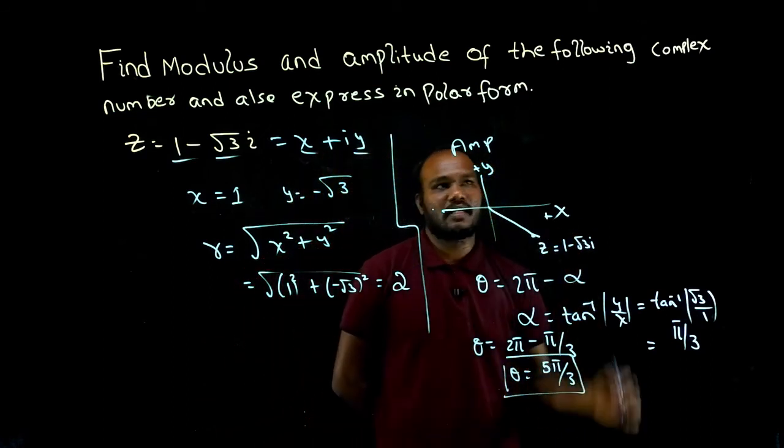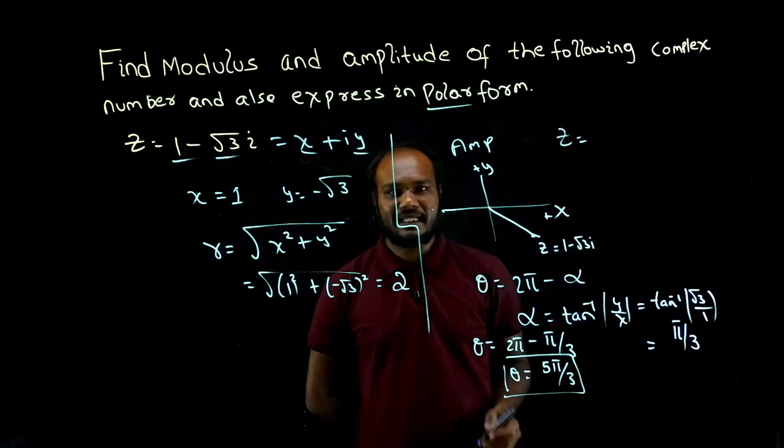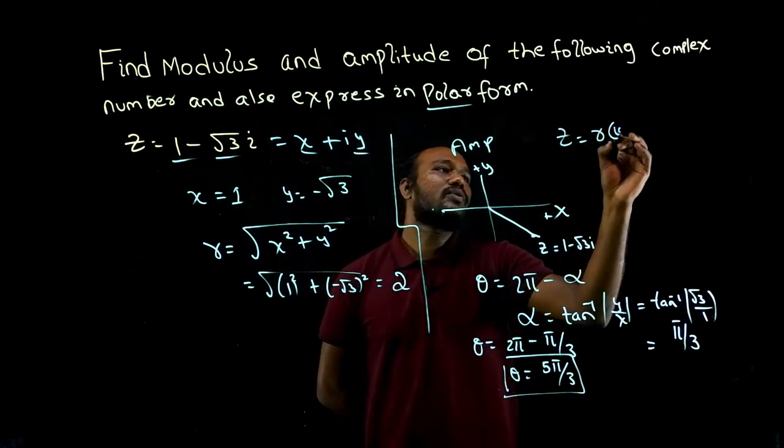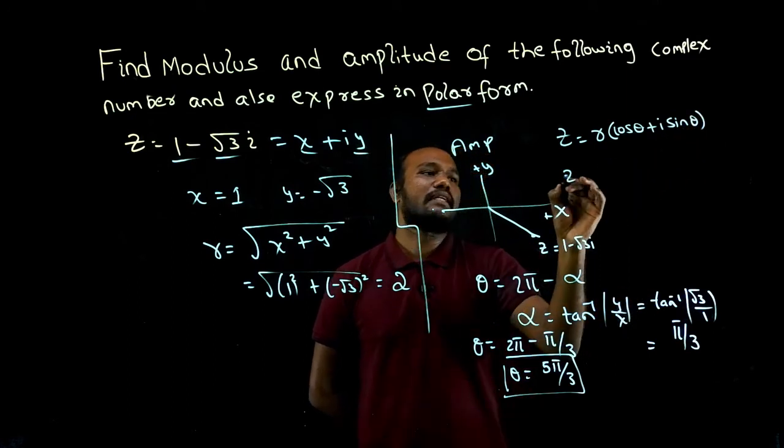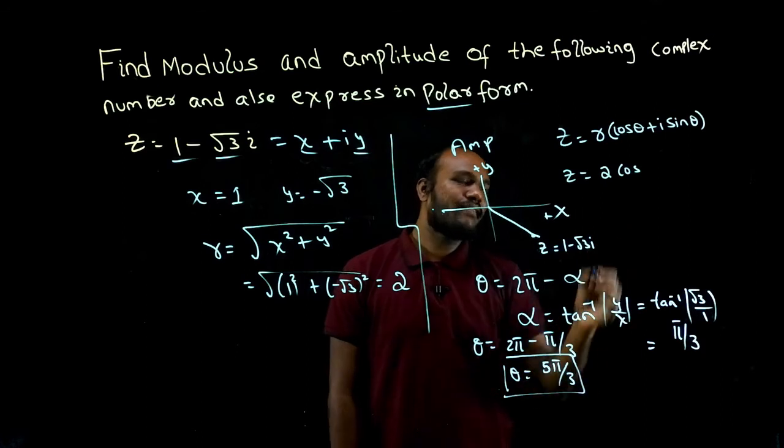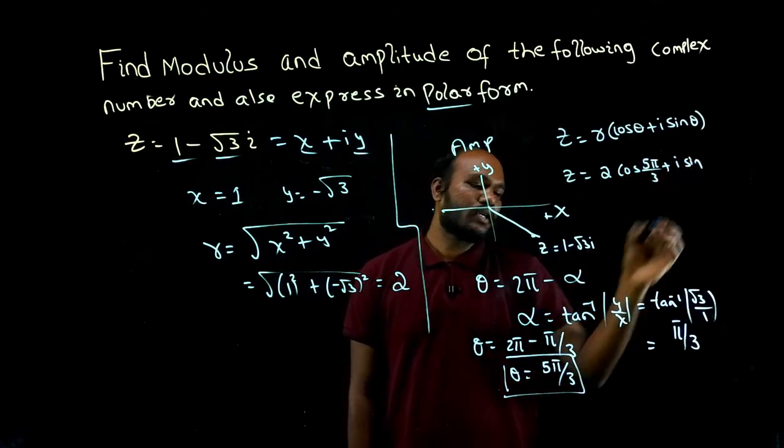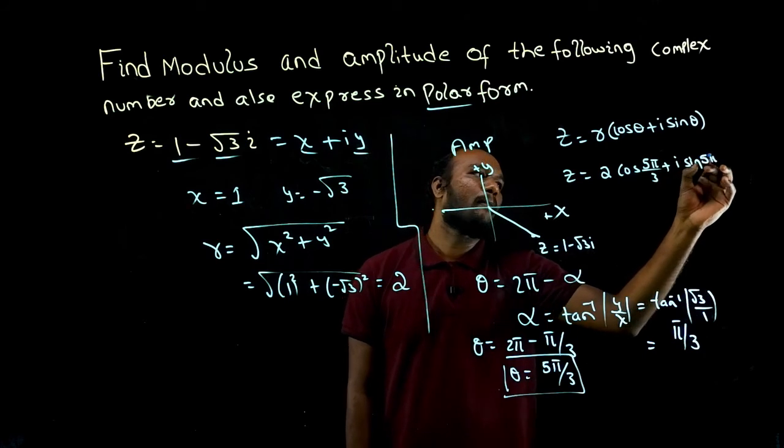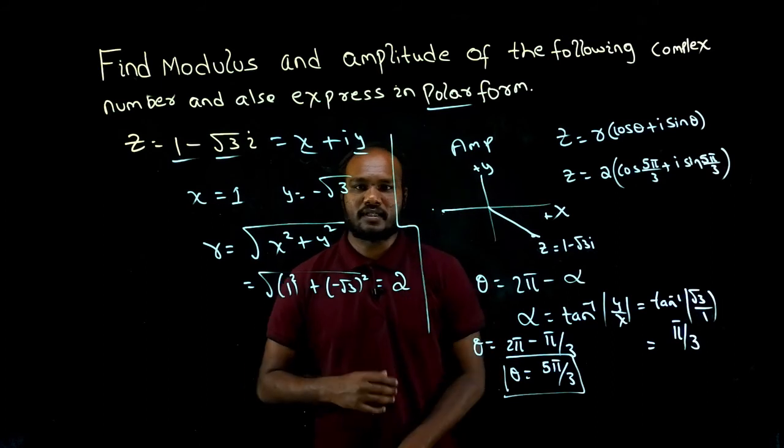Next we have to express this in polar form. What is polar form? Z equals R times (cos theta plus i sine theta). What is the R value? R is 2. What is theta? 5π upon 3. So it's 2 times (cos 5π/3 plus i sine 5π/3).